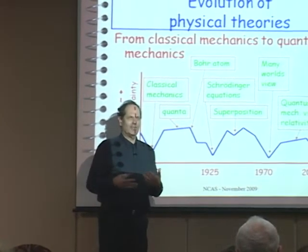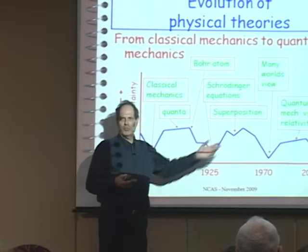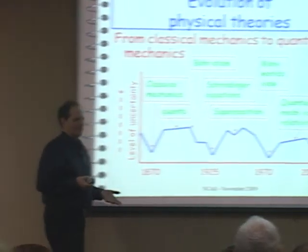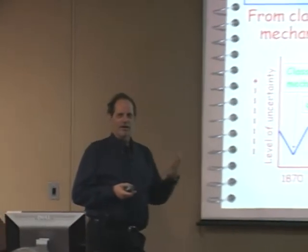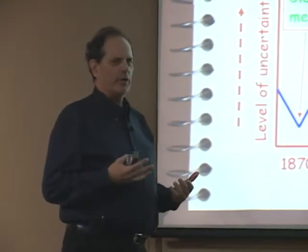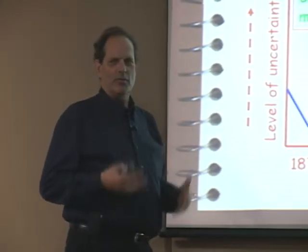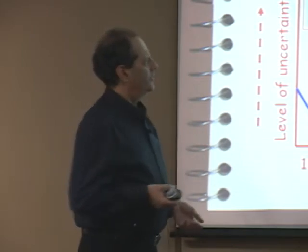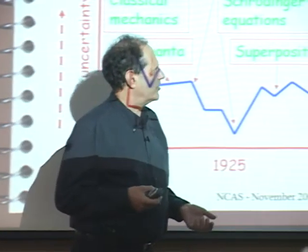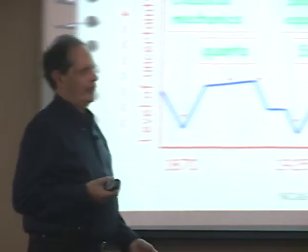We like to think that they're both true, so there's a problem: relativity and quantum mechanics both describe the same world, the same reality, yet they're incompatible. So physics is in some sort of turmoil — you have all this work going on now in string theory and multi-dimensional spaces — and the big goal of the physics world is we want some sort of unified field theory.